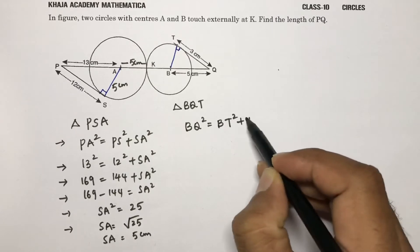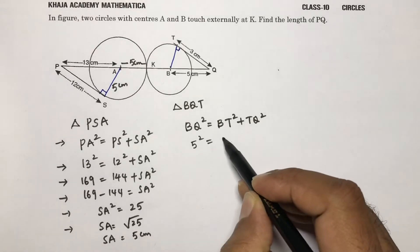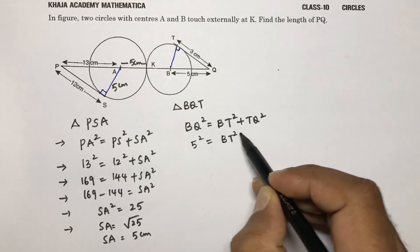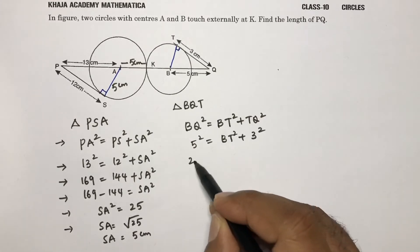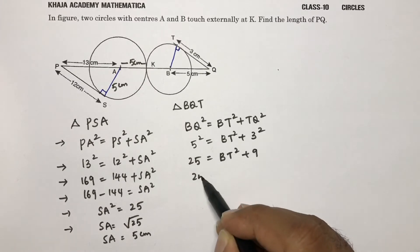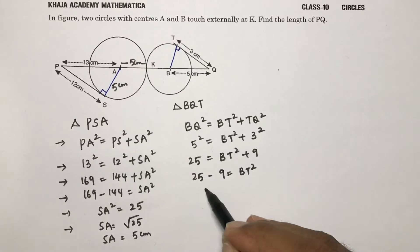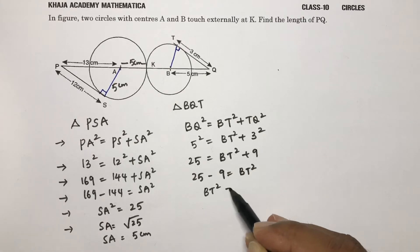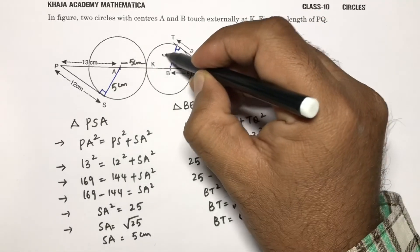BT square plus TQ square. So BQ is 5 square, BT square plus TQ is 3 square. So 25 equals BT square plus 9. 25 minus 9 is BT square, so BT square is 16. BT equals root 16, BT equals 4 centimeters.